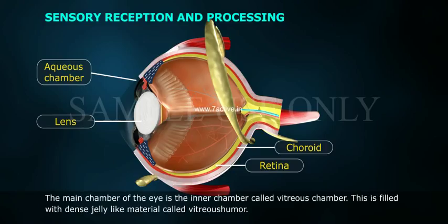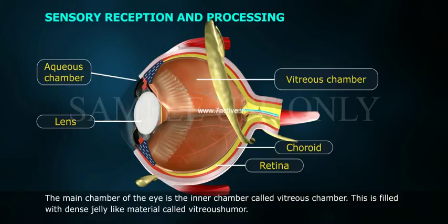The main chamber of the eye is the inner chamber called the vitreous chamber. This is filled with a dense jelly-like material called vitreous humor.